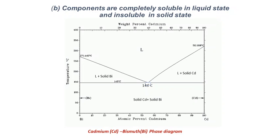A well-known example for this class is the solid solution made up of cadmium and bismuth. Similar to the previous case, if we analyze the cadmium-bismuth phase diagram, we construct it with temperature on the y-axis and percentage composition on the x-axis. Bismuth is on the extreme left side and cadmium on the extreme right side, so 100% bismuth is marked on the extreme left and 100% cadmium on the extreme right, with percentage cadmium varying in atomic percent along the x-axis.